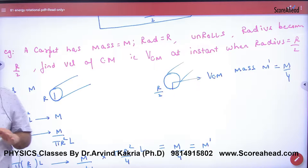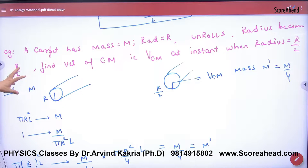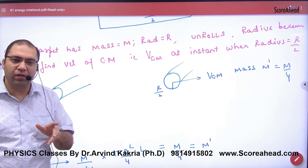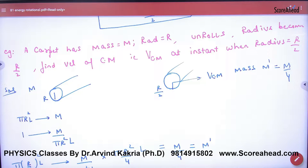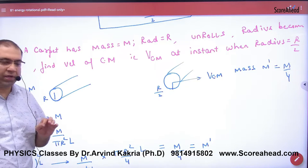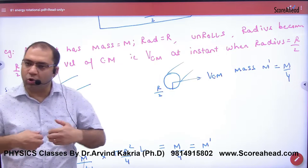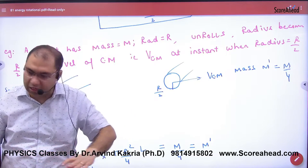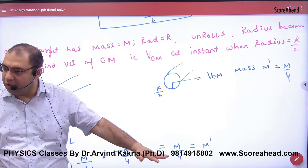In rotational kinetic energy, the question is that you have a carpet. A carpet is a cylinder, and its radius is R. The carpet has been opened by someone, so it starts to roll and opens and opens. So now it is moving.